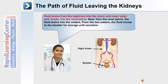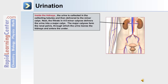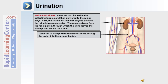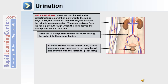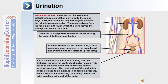The urine eventually reaches the bladder for storage. Inside the kidneys, urine is collected by the collecting tubules and delivered to the minor calyx. Between four and five minor calyces deliver the urine into a major calyx, which then leaves the kidney through the ureter. The urine is transported from each kidney through the ureter to the urinary bladder. As the bladder fills, stretch receptors send impulses to the spinal cord and eventually to the cortex for processing.